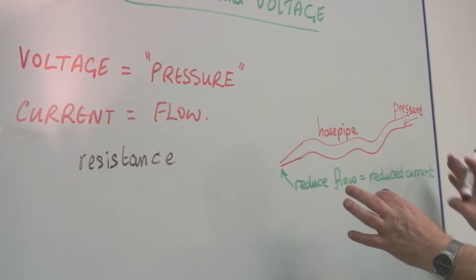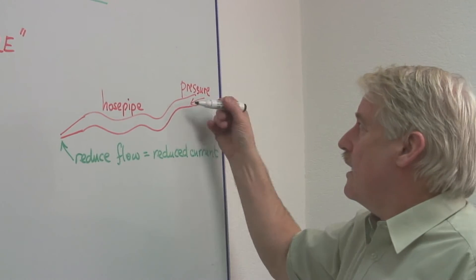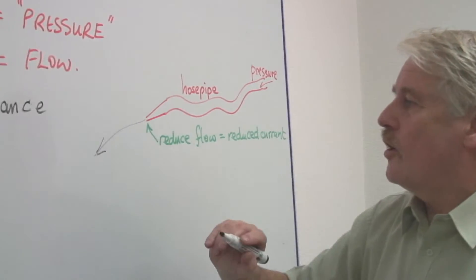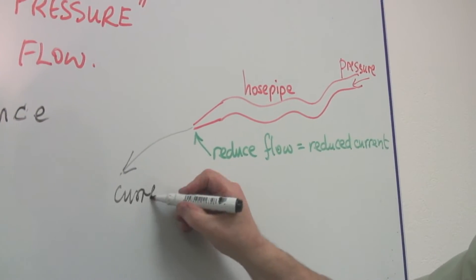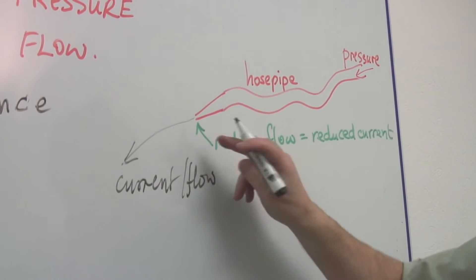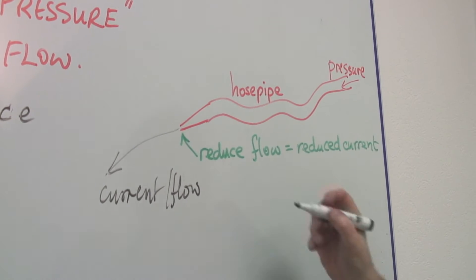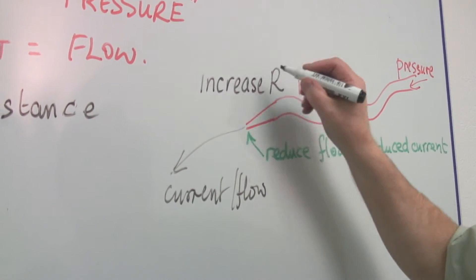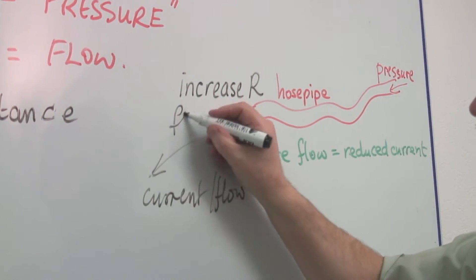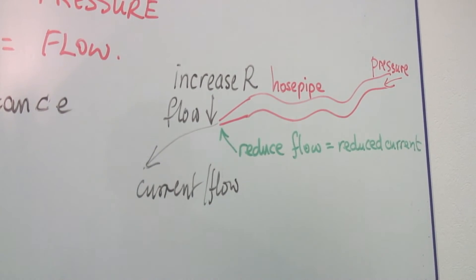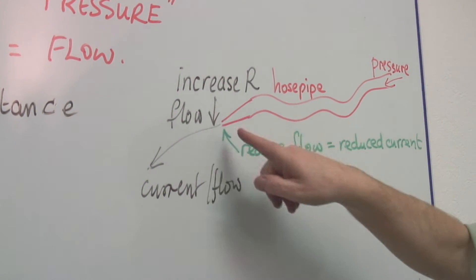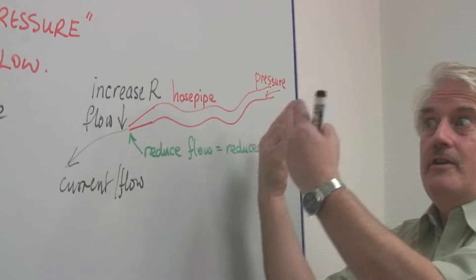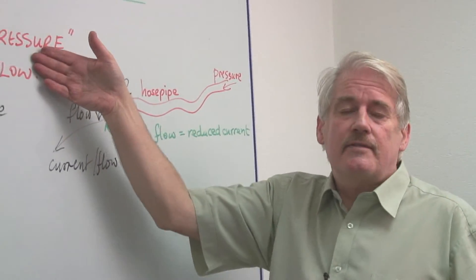Now, if we have a hose pipe, for example, we can have a pressure applied to the hose — water pressure. But the amount of flow, the current, or the flow, depends on how big the opening is. And if I increase the resistance, then the flow is going to go down. So this is the important idea that you can get from a hose pipe which you can imagine in your mind, and then transfer to the same idea in a piece of electrical wire.